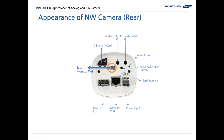Lastly, we have a test monitor output for checking the video on a mobile display at the installation site. Those were brief explanations of the appearance of analog and network cameras. Thanks for watching — see you next time.